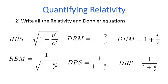The next thing I did was write all the equations I could think of related to relativity and the Doppler effect. I came up with six equations. Each equation deals with a particular scenario. The two relativity equations correct for relativistic effects, and the four Doppler equations correct for Doppler shift in frequency. I'll explain the codes associated with each shortly.